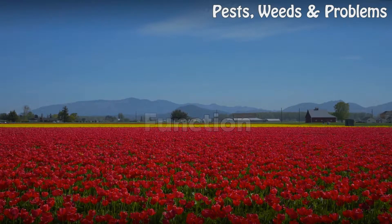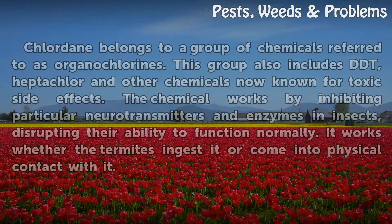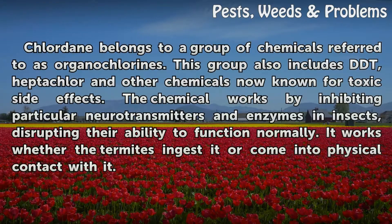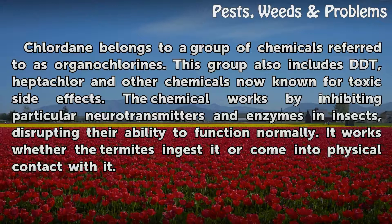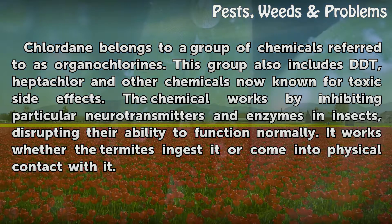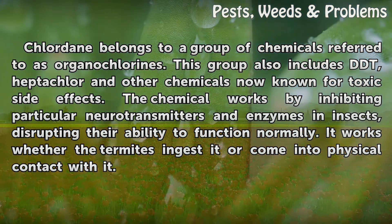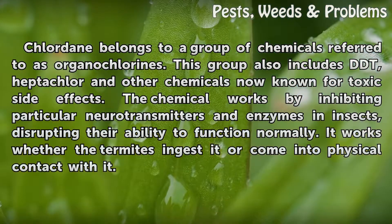Chlordane belongs to a group of chemicals referred to as organochlorines. This group also includes DDT, heptachlor, and other chemicals now known for toxic side effects.